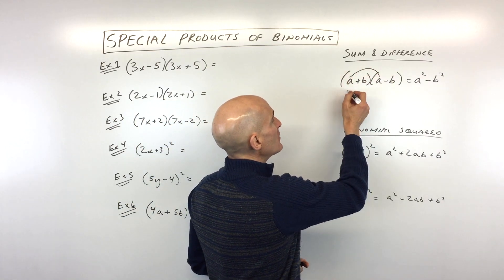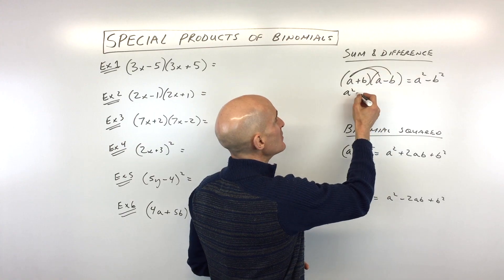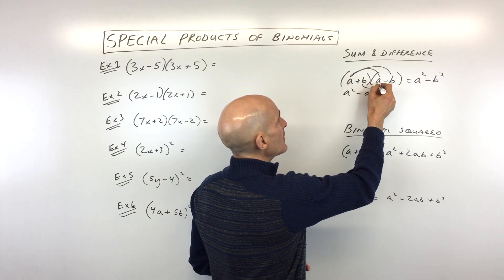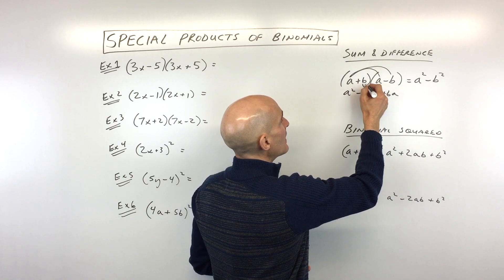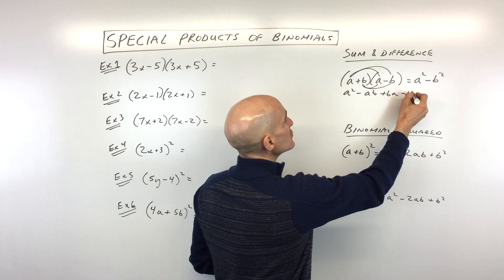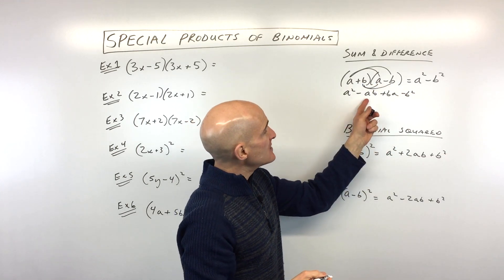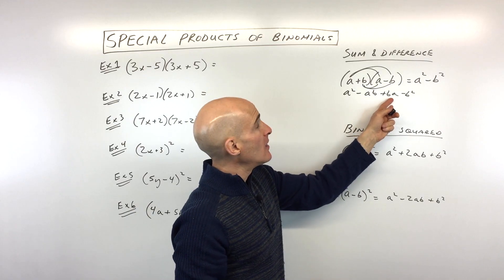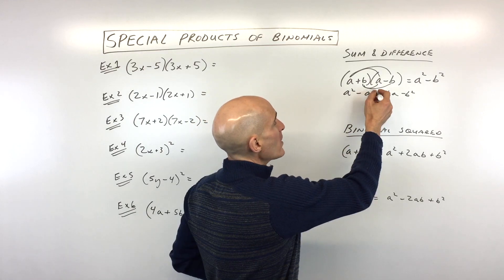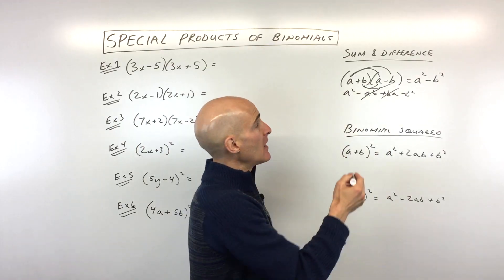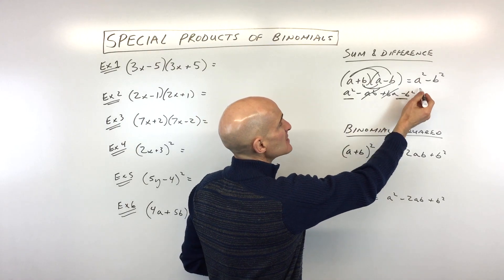If we distribute the a, we get a squared. If we distribute the a to the b, we get negative ab. And then we get b times a and then negative b squared. But what you'll notice is the negative ab and the positive ba are the same terms. So one's negative, one's positive, they cancel.